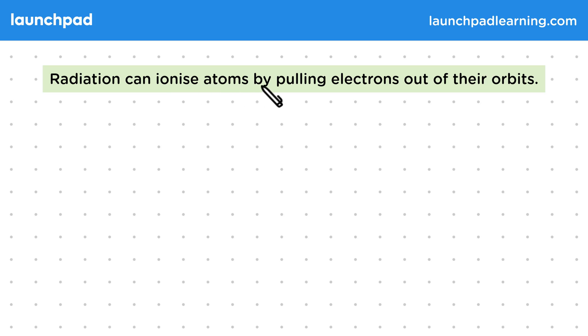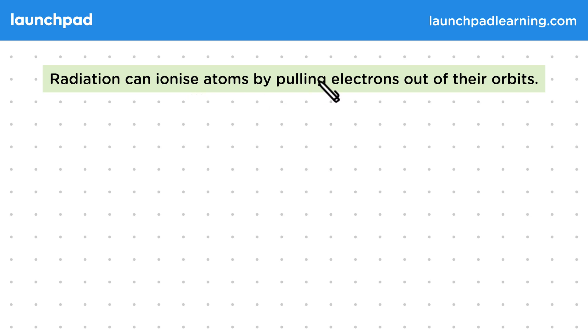Radiation can ionise atoms by pulling electrons out of their orbits. Ionisation is the process of giving an atom charge by removing or adding electrons to it.